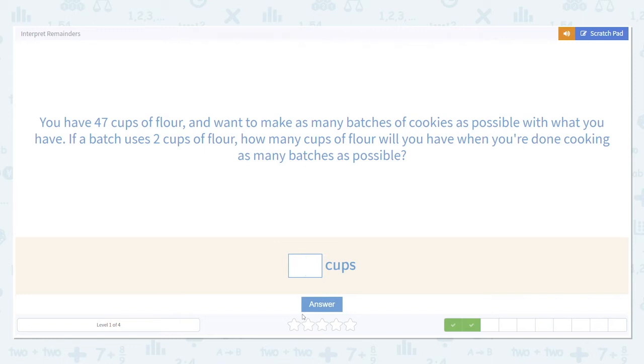This problem looks a little bit different, but let's think about what's happening here. If you baked three batches of cookies, you would use six cups of flour. So if you had started with seven, you would have one left over.